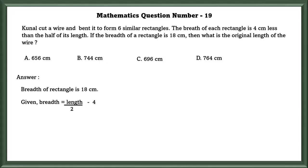Breadth of the rectangle is 18 centimeters. The breadth of each rectangle is 4 centimeters less than half of its length. Given: breadth equals length divided by 2 minus 4. If we bring 4 to the other side, we get 18 plus 4 equals length by 2. From this, we can find the length, which is equal to 44 centimeters.